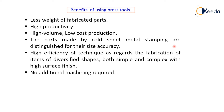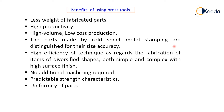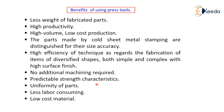For press parts, no additional machining is required in the majority of cases. Press tools also provide predictable strength characteristics for many components and uniformity of the parts. Once a particular press tool is designed to manufacture components, it creates a similar kind of shape and form consistently, ensuring uniformity in shape and form. Additionally, press working is less labor-consuming. Low cost materials are also a benefit of using press tools.